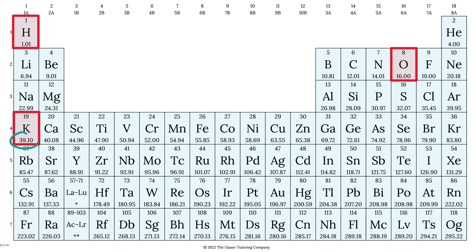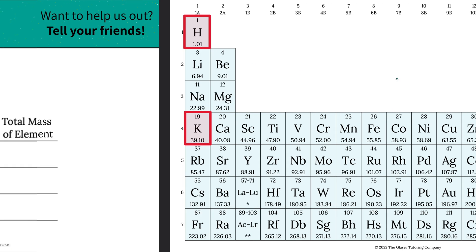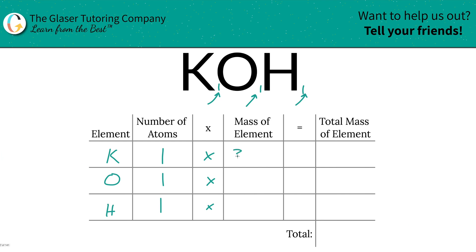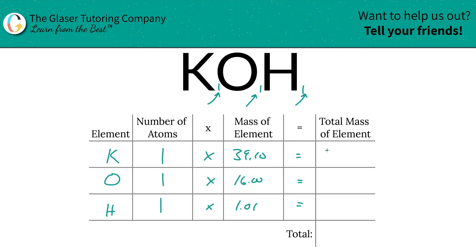We're going to use the periodic table to help us out. The mass of potassium is 39.10, hydrogen is 1.01, and oxygen is 16. So let's plug them in: potassium is 39.10, oxygen is 16, and hydrogen is 1.01. Then we're going to find the total mass of the elements in the compound by multiplying across for each element. That gives us 39.10, 16 for oxygen, and 1.01 — it's the same as the masses because there's only one atom of each.